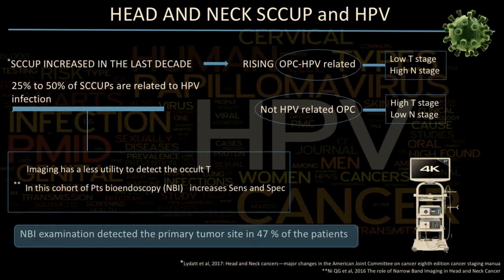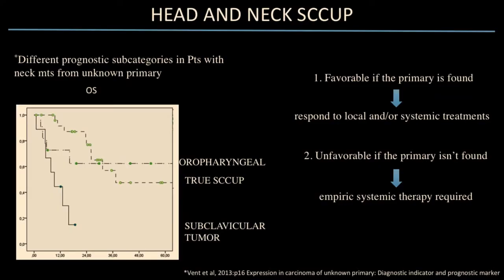From the paper published by Nii, imaging proved less useful to detect the occult T in the last decade, while bioendoscopy has increased sensitivity and specificity. NBI examination detected the primary tumor site in at least half of patients, increasing the detection rate compared to imaging, probably because these are more commonly oropharyngeal tumors. Finding the primary is very important because it makes a significant difference in treatment planning.